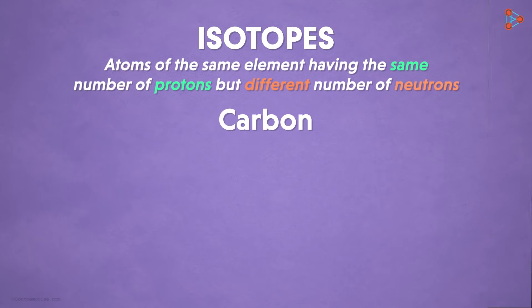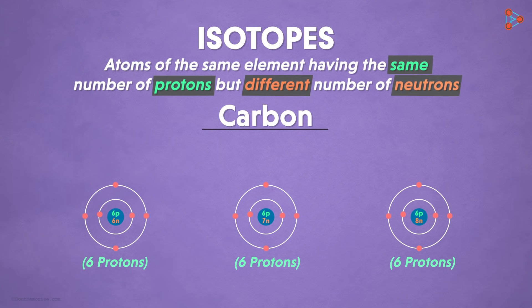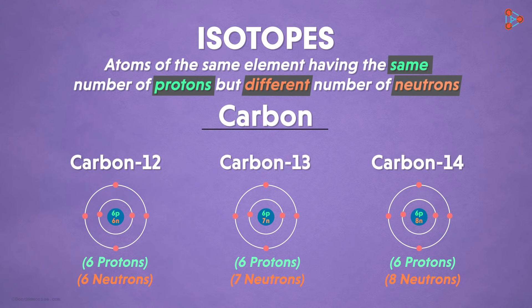For instance, we have carbon with 3 isotopes. As we can see here, each isotope has 6 protons but different number of neutrons. One has 6, the other has 7 and the last one with 8 neutrons. We name these isotopes as carbon 12, carbon 13 and carbon 14 respectively.